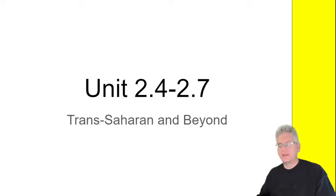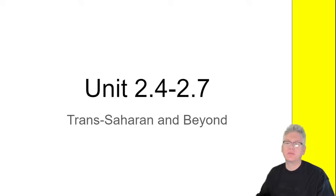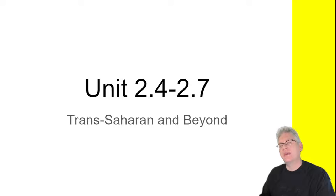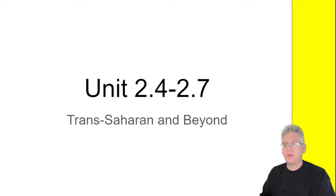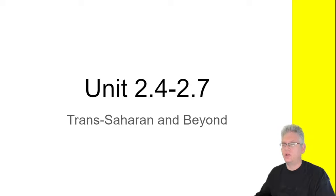Hello everyone, hope you're doing okay. This is your world history teacher Ben Osborne talking to you about units 2.4 to 2.7, which is reasonably interesting. This one is mostly going to be about the trans-Saharan trade, and as always with the College Board material, 2.5, 2.6, and 2.7 is kind of a remix — some similar information covered again in a different context. The trans-Saharan trade network is our big topic here.